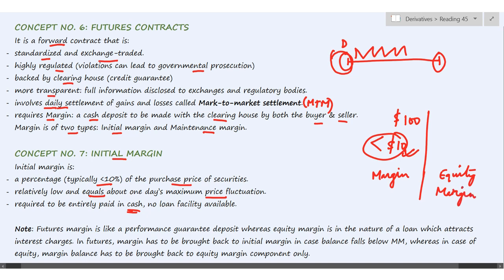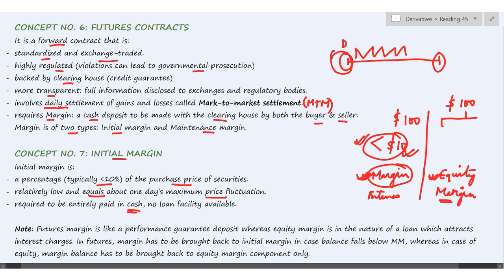The margin money in futures is the initial deposit — it is like a performance guarantee so that if you incur a loss, you do not run away without making payment. That is why this amount is taken in advance. However, in the equity market, the concept of margin relates to borrowings. For instance, if you want to buy a security worth $100 and don't have all the money, you can invest $40 of your own and borrow $60 as a loan.